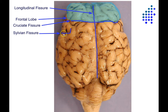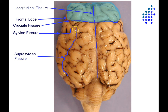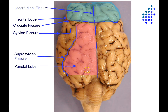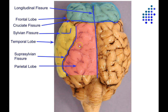The sylvian fissure is also sometimes called the lateral fissure or lateral sulcus. Just medial and dorsal to that is the suprasylvian fissure. Supra means above, and from the lateral view you'd see this is dorsal or above the sylvian fissure. It's a useful landmark in the sheep brain because it divides the parietal lobe — all the cortex medial to it — from the temporal lobe, which is all the cortex lateral to it.